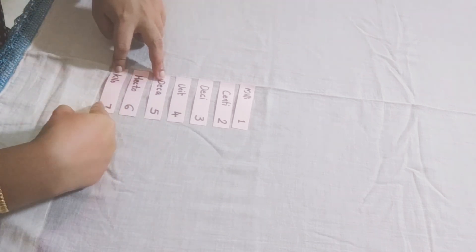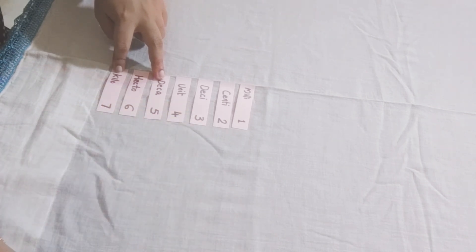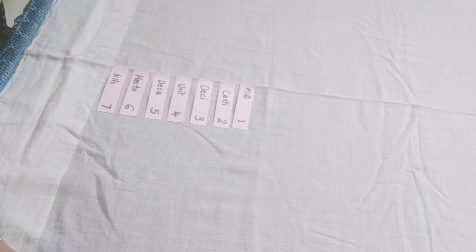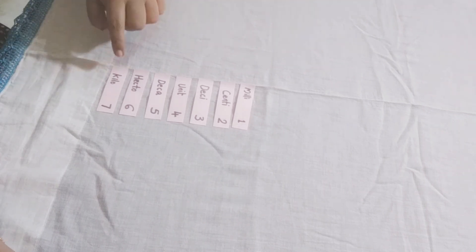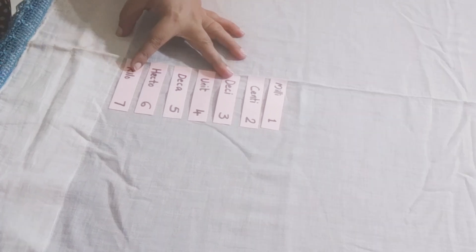If you want to convert kiloliters to decaliters, what do you do? Seven minus five is two. So you can add two zeros to the number, or multiply that number by hundred.